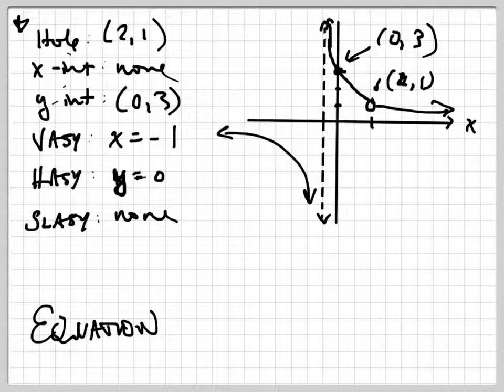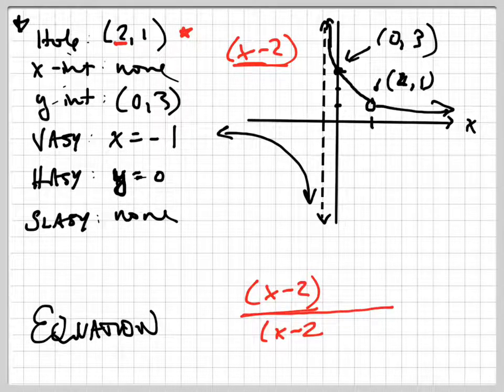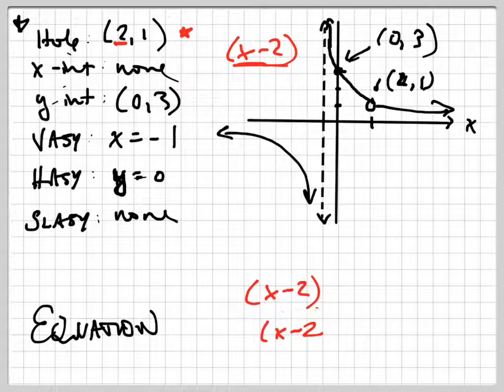Let's turn this information backward into an equation. I'm going to color code this so you can see what I'm doing. To find the hole means that the x value of 2 represents the factor of x minus 2, and we know that x minus 2 has to be on the top and the bottom in order for there to be a hole.